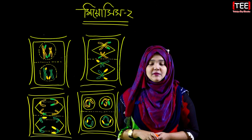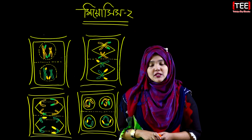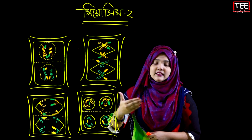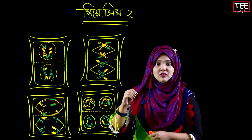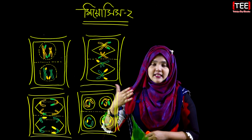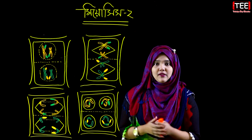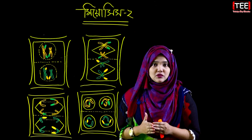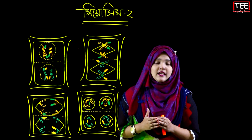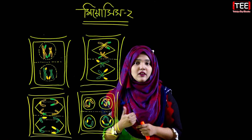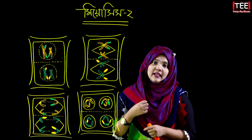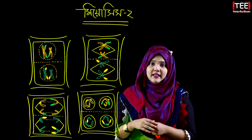In Meiosis 1, we have seen that in the middle of the bivalence of synapses, the homologous chromosomes are separated. We have to look at the chromosome in the cell, and that means that Meiosis 1 results in our chromosomes being separated.